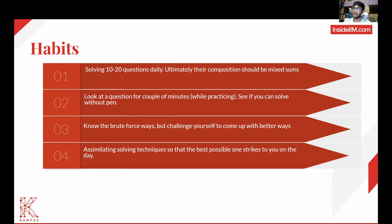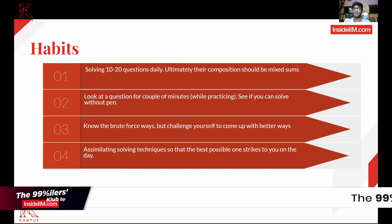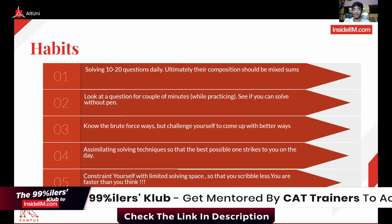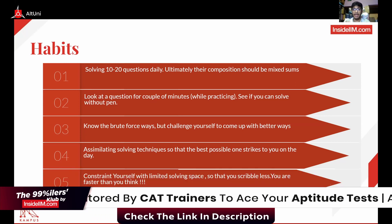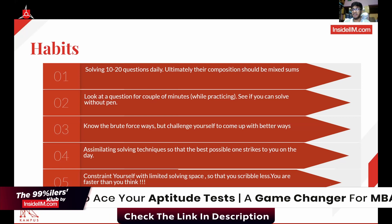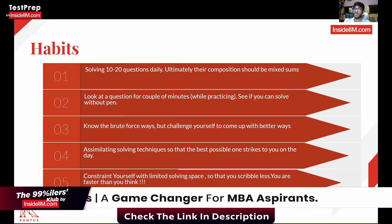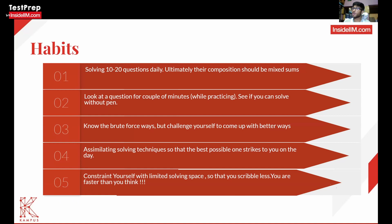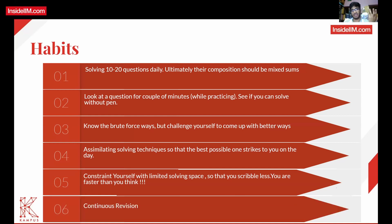Discuss with friends. When you solve a problem, check the solution from your coaching institute, and ask friends if they found a more efficient method — note it down. Constrain yourself to limited solving space so you scribble less and work faster than you think. The sixth habit is continuous revision.